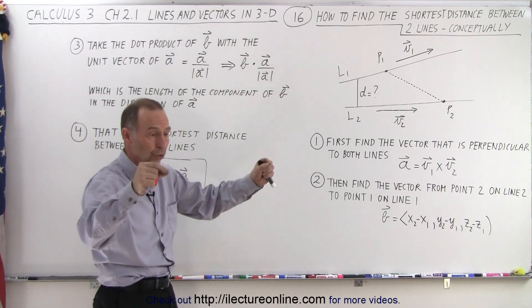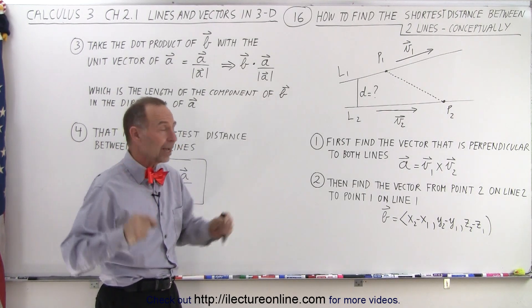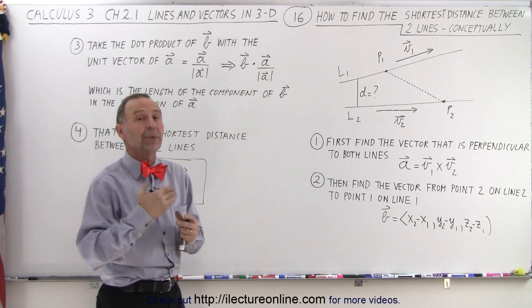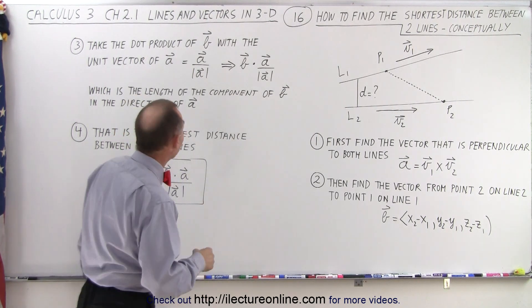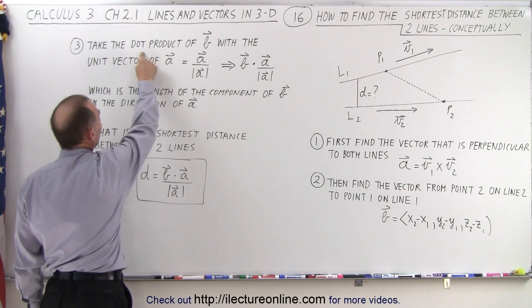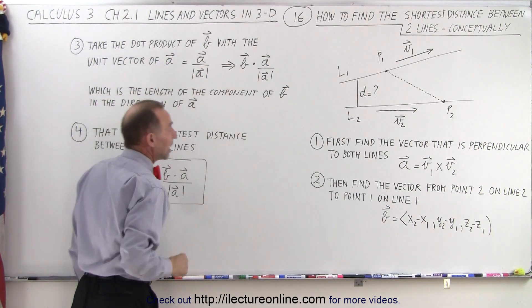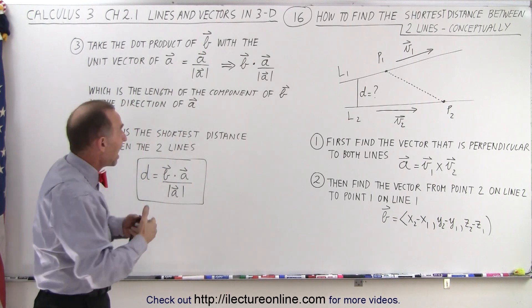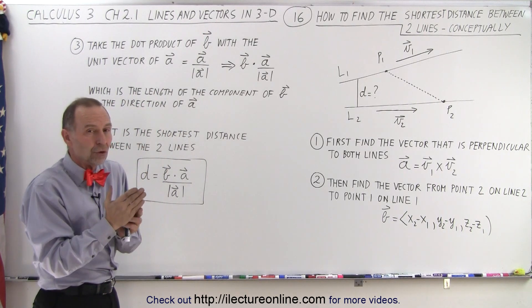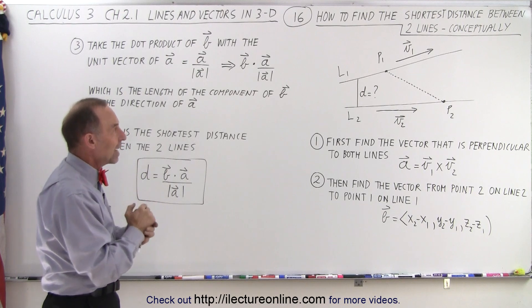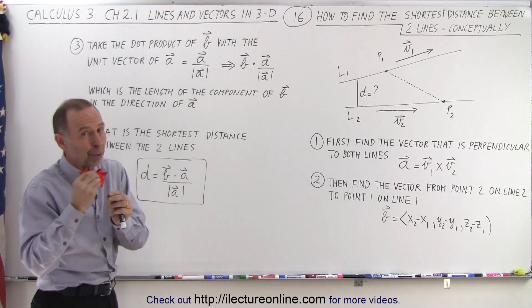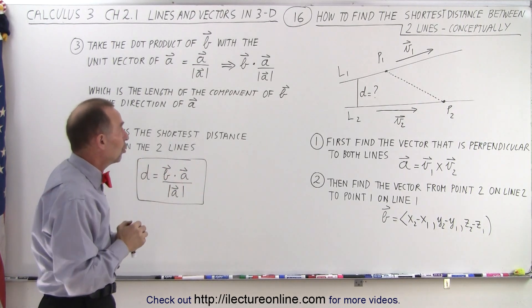Vector B connects two points, one on each of the lines, and vector A is perpendicular to both of the lines. Then, we're going to take the dot product of vector B with the unit vector of vector A, in other words, with vector A divided by its magnitude to simply get the direction along vector A. Remember, vector A was simply perpendicular to both lines one and two.